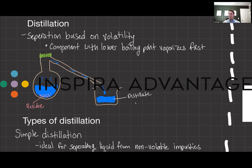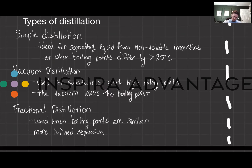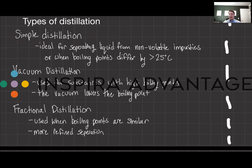There are three important types of distillation you need to know for the MCAT. The first is the simplest and is named as such — simple distillation. This is ideal for separating a liquid from a non-volatile impurity, or when the boiling points of two liquids differ very significantly, usually by more than 25 degrees Celsius. A good example would be separating hexane from water — hexane boils at a negative temperature, while water boils at 100 degrees Celsius.